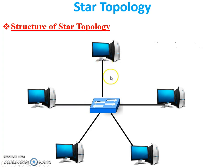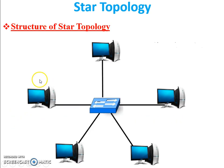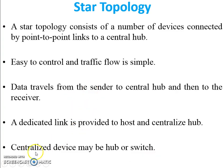Data travels from the sender to the central hub and then to the receiver. A dedicated link is provided between the host and the centralized hub — this is a point-to-point connection, meaning there is only one direct link connecting the workstation to the hub. The centralized device may be a hub or switch.